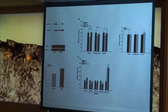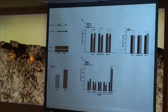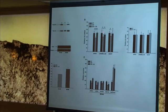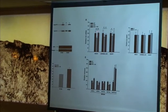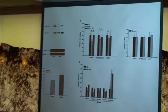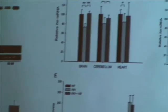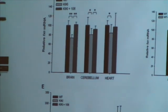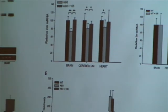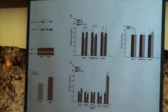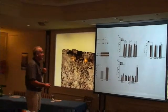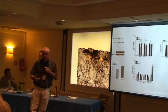When we treated these animals with one of these molecules, called compound 106, we were able to normalize frataxin levels both at the RNA level — as you can see here across three different tissues — and at the protein level, as shown here in the brain. Histones were re-acetylated back to wild-type levels. This molecule had no effect on wild-type mice, which lack the repeat and therefore have no epigenetic change in that region.